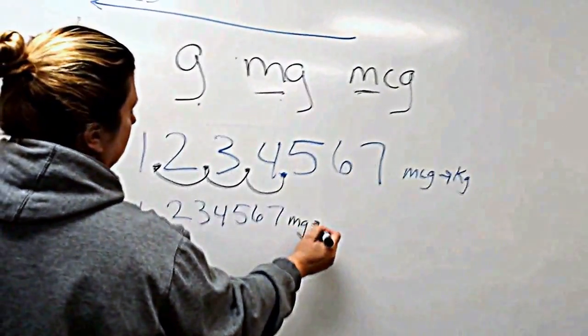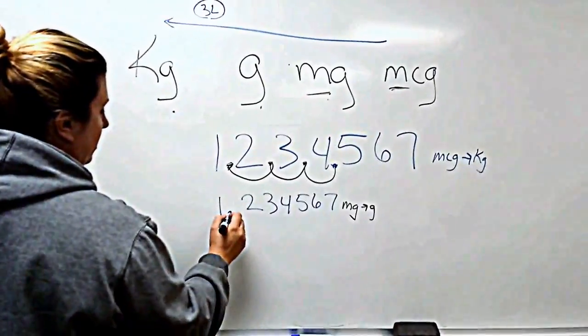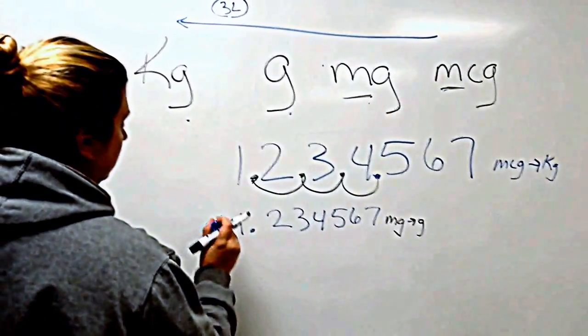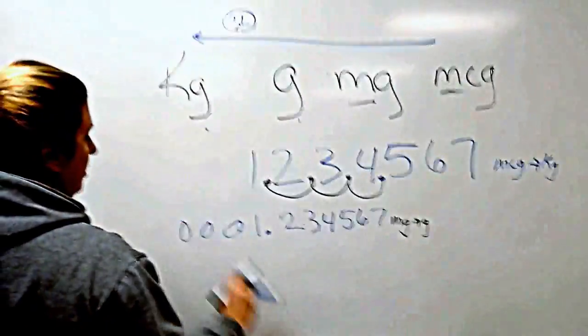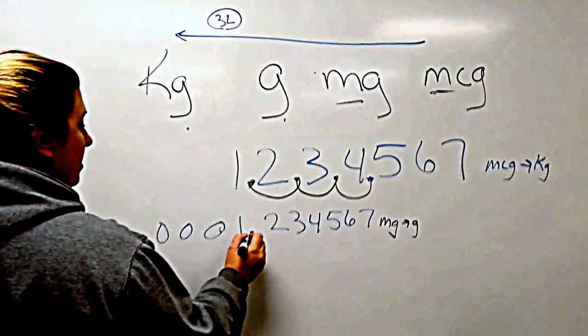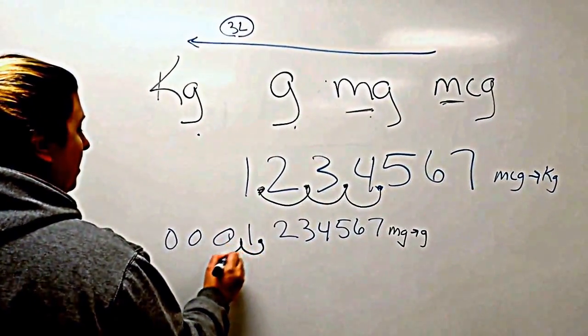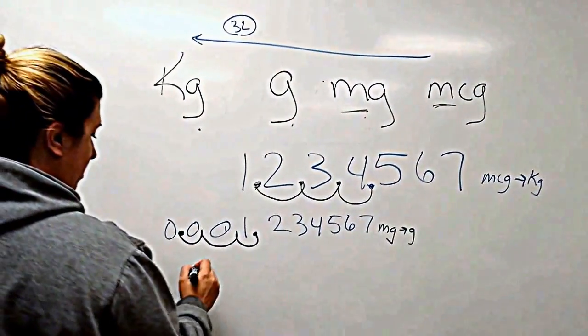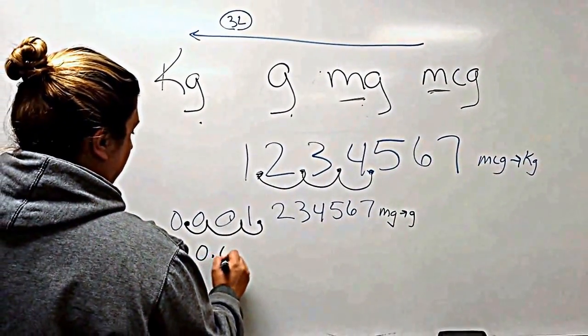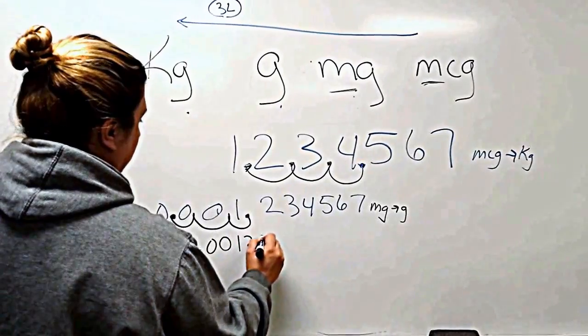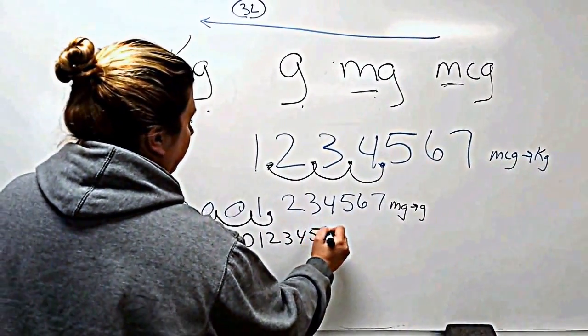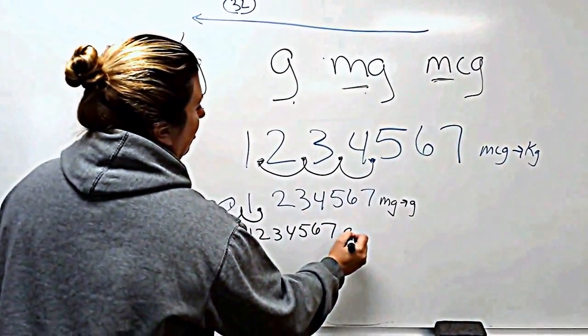And then you go from micrograms to grams. So you're going to, let's add some zeros so that our little bump makes more sense. So we're going to pick up the decimal point and we're going to say one, two, three. And our new number is zero, point, zero, zero, one, two, three, four, five, six, seven grams.